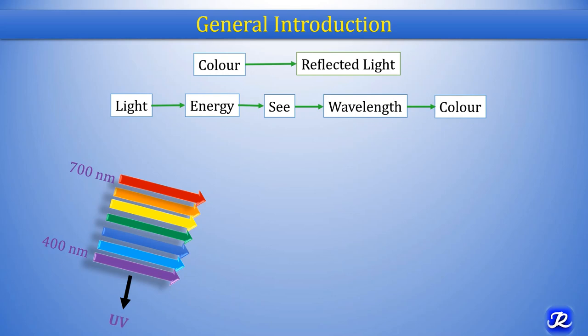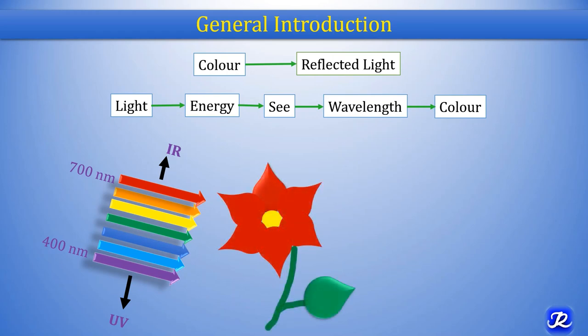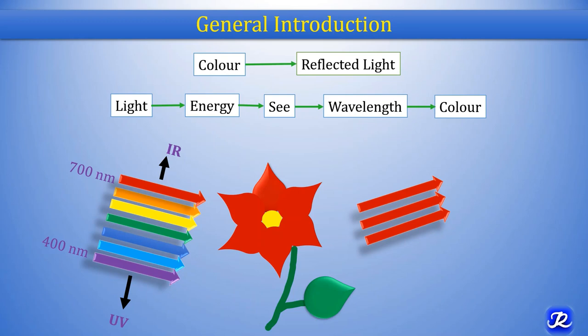Wavelengths below 400 nanometers are ultraviolet rays which we cannot see with our naked eyes, and above 700 nanometers are infrared rays. Color is in the visible range of light, i.e., 400 nanometers to 700 nanometers. The basic question is why a particular color appears as that color — for example, why a red flower appears red and a green leaf appears green. Because the red flower reflects red light and absorbs all other light from the visible spectrum. Likewise, a green leaf reflects green light and absorbs all other wavelengths of light.